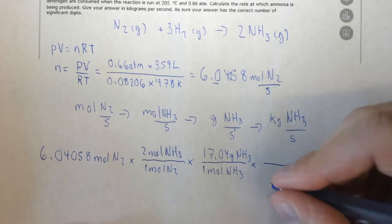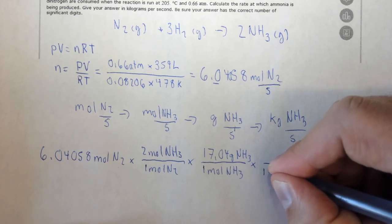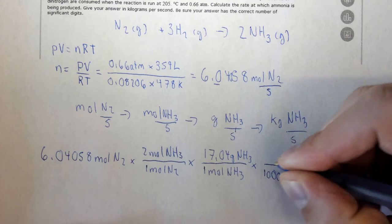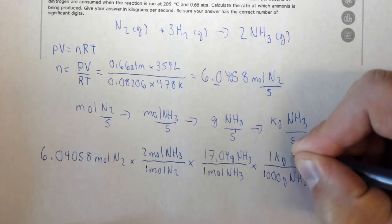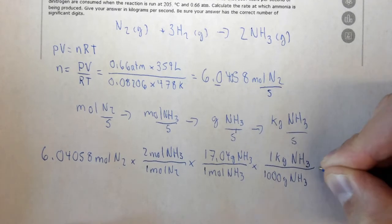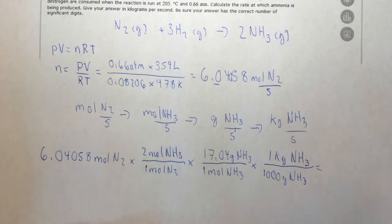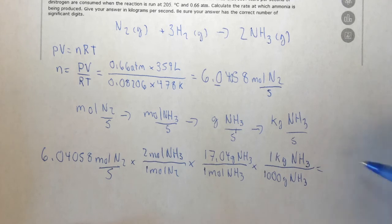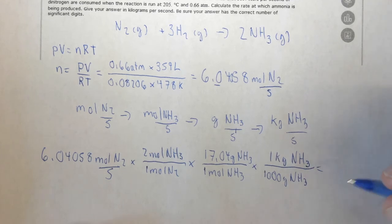Now we need to go to kilograms. There are 1,000 grams in 1 kilogram. So that's exactly how you would have done it in the past. The only difference is, now this has this per second thing, but it doesn't matter. You're going to get kilograms per second over here.